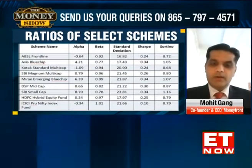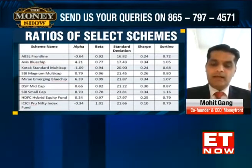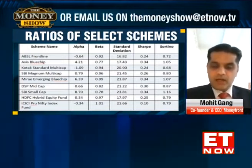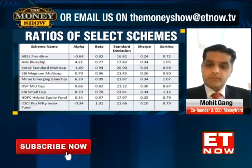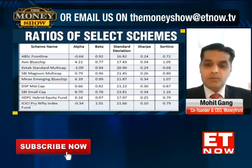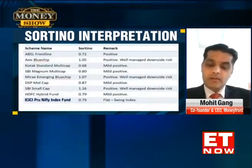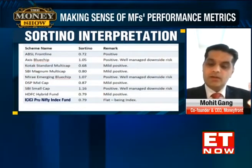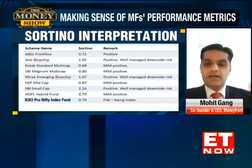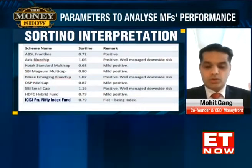What Sortino actually does is it eliminates the upside volatility. It just takes the downside volatility, or the downside standard deviation, into consideration, and then it computes the sharpness of the scheme based on the returns generated per unit of downside risk. So, risk-adjusted return but adjusted only for downside risk — that is the Sortino ratio.